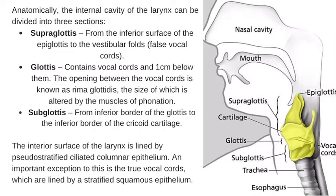The anatomical structure of the larynx: anatomically, the internal cavity of the larynx can be divided into three sections — the supraglottis, glottis and subglottis. The supraglottis extends from the anterior surface of the epiglottis to the vestibular folds, also called vocal cords. The glottis contains the vocal cords and one centimeter below them; the opening between the vocal cords is known as the rima glottidis, the size of which is altered by the muscles of phonation. The subglottis extends from the inferior border of the glottis to the inferior border of the cricoid cartilage. The interior surface of the larynx is lined by pseudostratified ciliated columnar epithelium, with an important exception: the true vocal cords, which are lined by a stratified squamous epithelium.